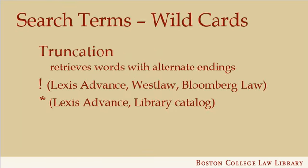There are some special characters you can use to build your own equivalents. These are called wild cards. The first wild card is a truncation character, which retrieves words with alternate endings. Lexis, Westlaw, and Bloomberg Law all recognize the exclamation point as a truncation character. This character includes in your search all terms that begin with the string to the left of the exclamation point, whether or not there are additional characters after that point. Note that not all search engines use the exclamation point — for example, our library catalog and Lexis Advance will also recognize an asterisk as a truncation character.